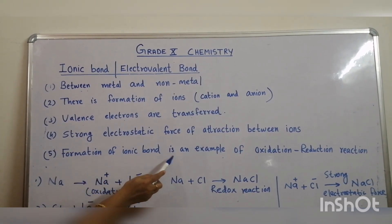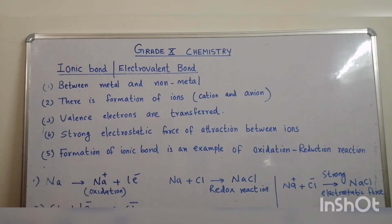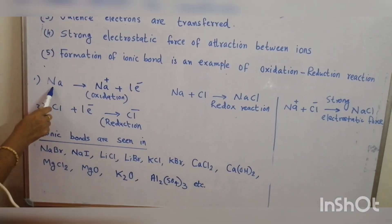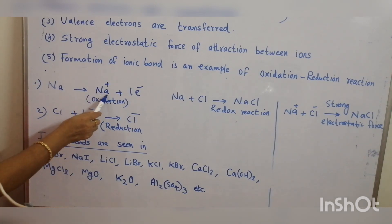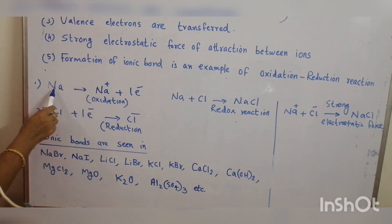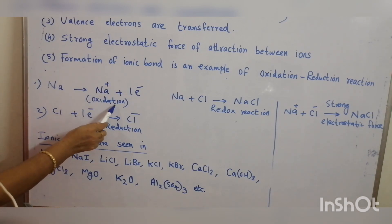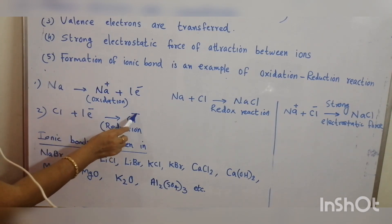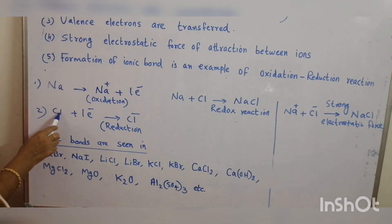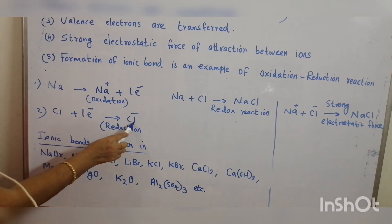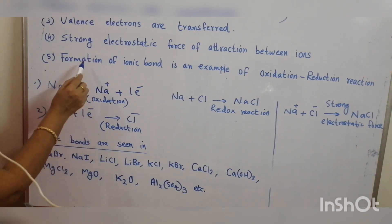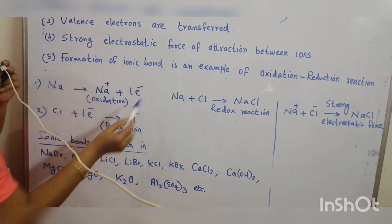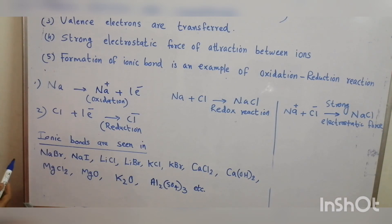Formation of an ionic bond is an example of an oxidation-reduction reaction or redox reaction. For example, sodium loses 1 electron and is converted to a sodium ion — this is oxidation. Chlorine gains 1 electron and is converted to a chloride ion — when an atom gains an electron, it is a reduction reaction. So, formation of an ionic bond is an example of a redox reaction.